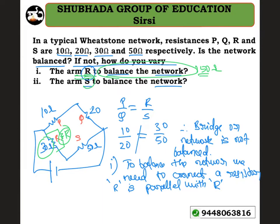So either you can connect a resistor in parallel or in series to balance the network. So this problem is very important for five marks. The condition for Wheatstone bridge is P/Q = R/S. P value is 10, divided by Q value which is 20, equals R divided by S, where S is 50.